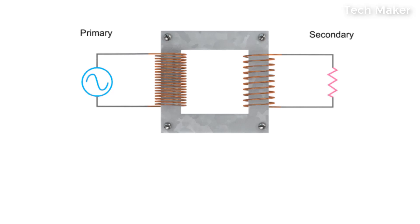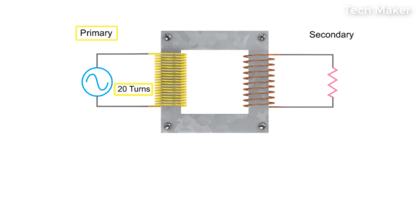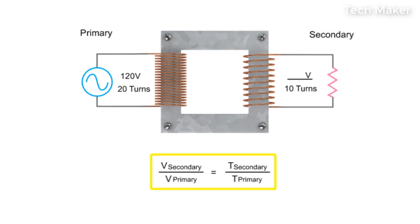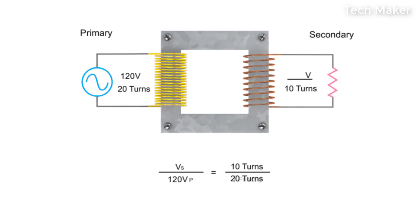If there are fewer coil turns on the secondary than on the primary, this is called a step down transformer, and the resulting voltage in the secondary circuit will be less than the primary. We can use a simple ratio formula to determine the decrease in voltage. This formula states that the secondary voltage to primary voltage ratio is the same as the secondary coil to primary coil turn ratio.